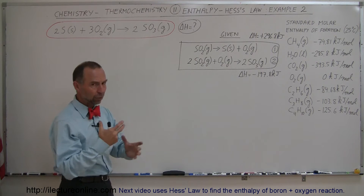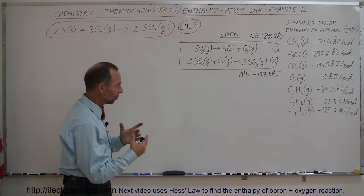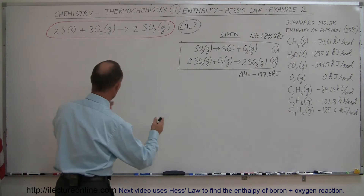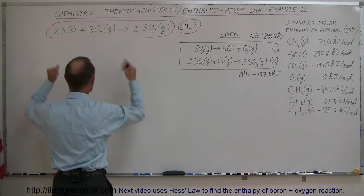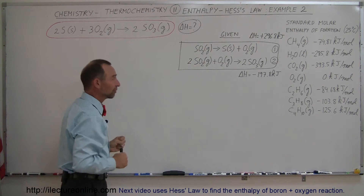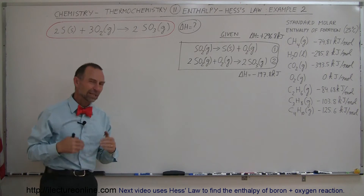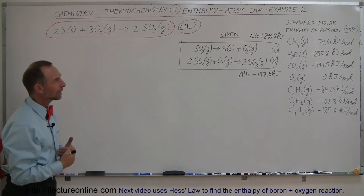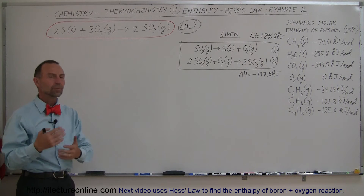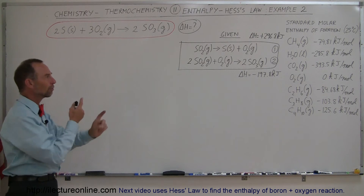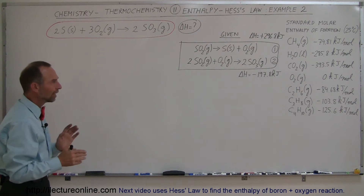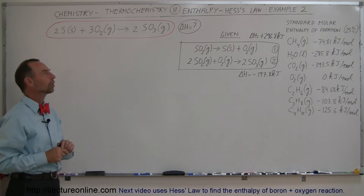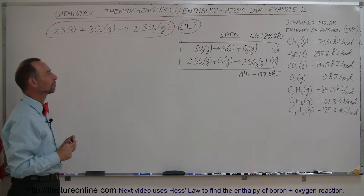Can we manipulate those two equations in such a way that we end up with the very same equation we have here? We need to algebraically add those, multiply them with some numbers, maybe reverse some equations. Let's come up with a good strategy.